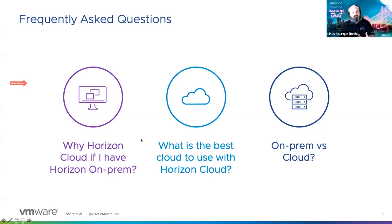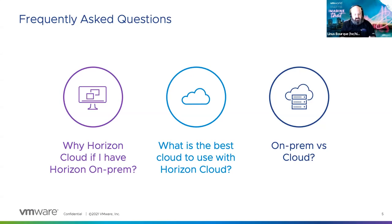One frequently asked question: why use Horizon Cloud if I have Horizon on-prem? Horizon on-prem will be around for a while, but if you really want to get the most out of your deployment — especially with multiple on-premise locations that are geographically distributed — there is a feature in Horizon Cloud that we don't have in Horizon itself: the Universal Broker. With traditional Horizon, I'd set up Cloud Pod Architecture, requiring all the load balancers, networking, DNS — it can be very complex.